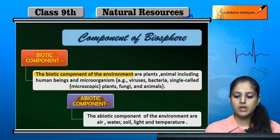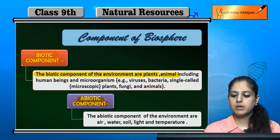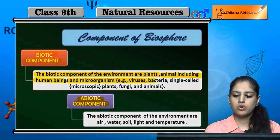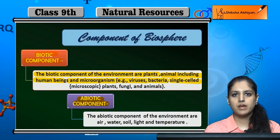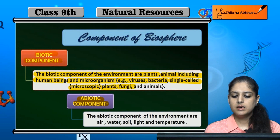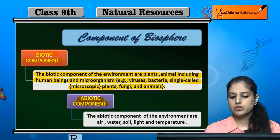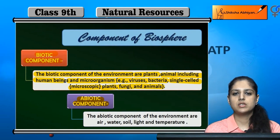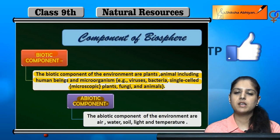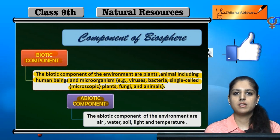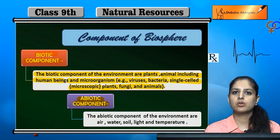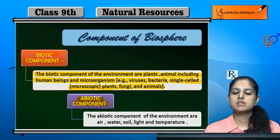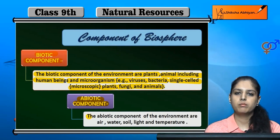The biotic components of the environment are plants, animals including human beings, and microorganisms — for example, viruses, bacteria, single-celled microscopic plants, fungi, and animals. In totality, every living thing on the earth's surface is a biotic component: plants, animals, human beings, all microorganisms, viruses, bacteria, single-cells, multi-cells, and fungi.